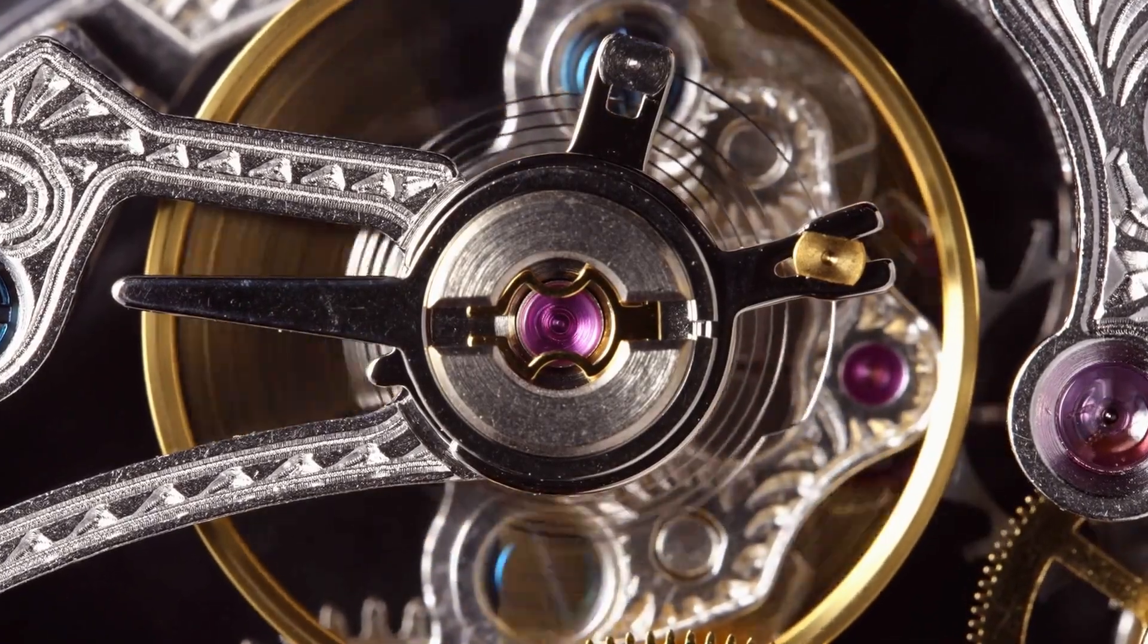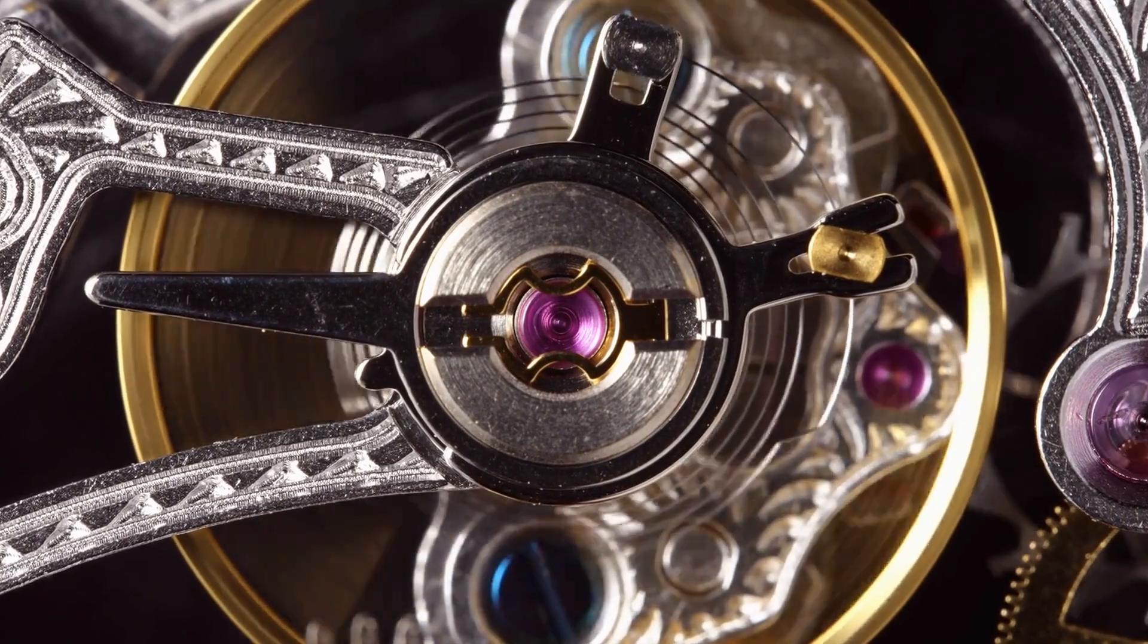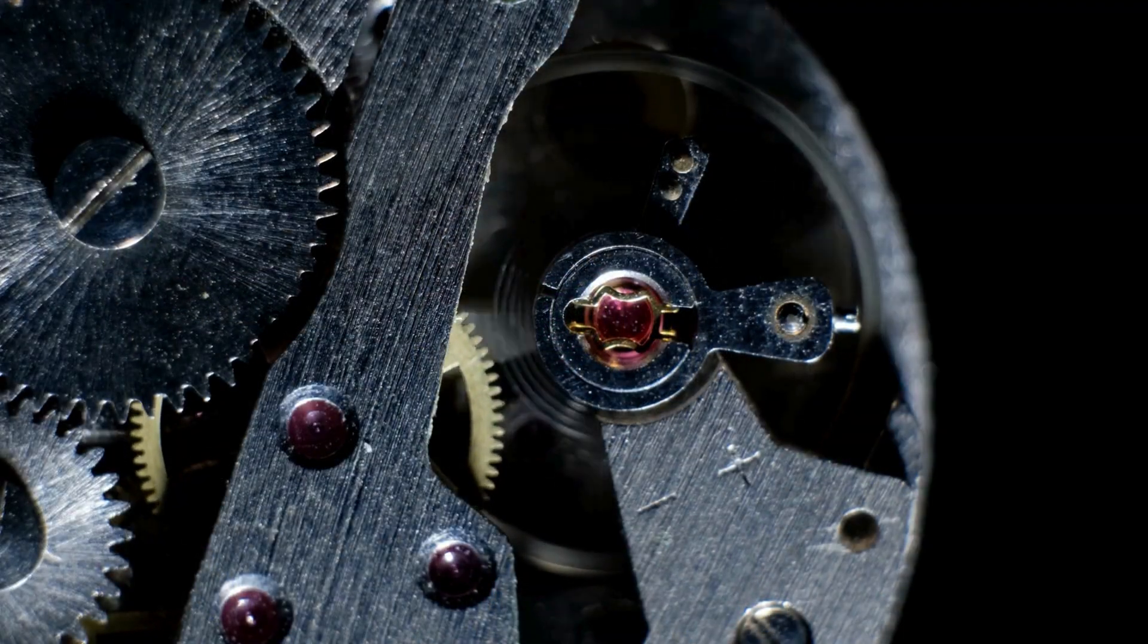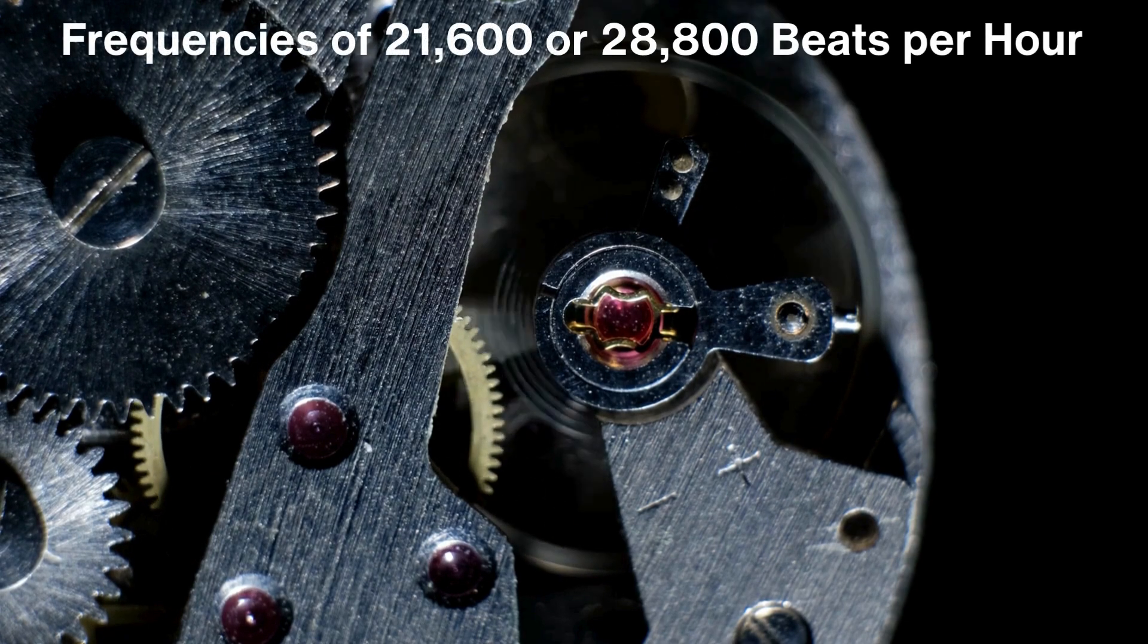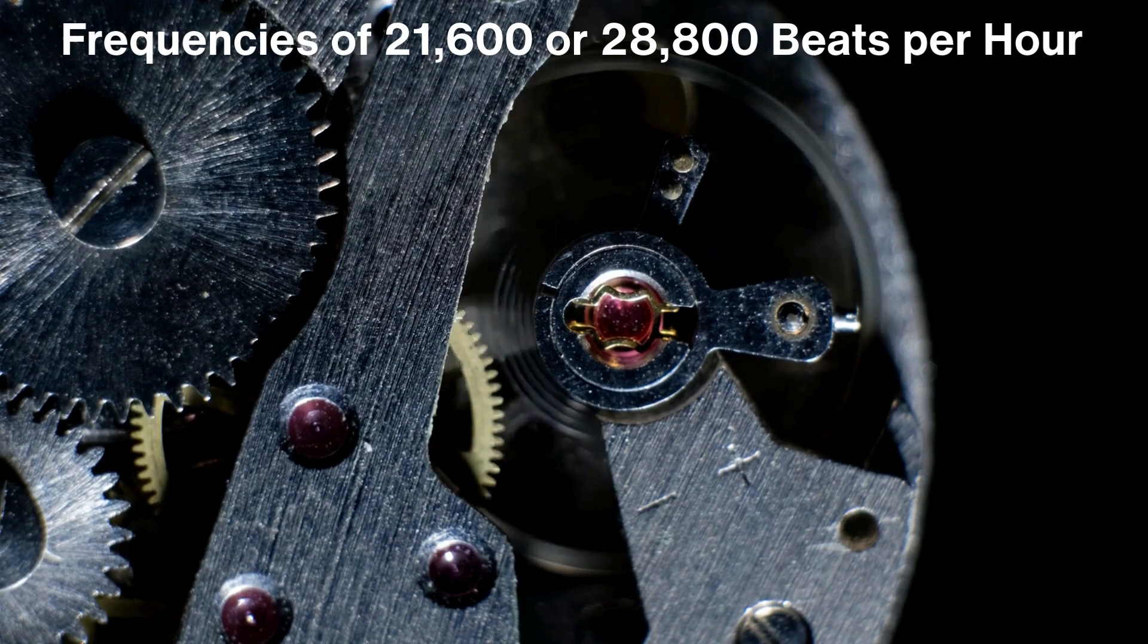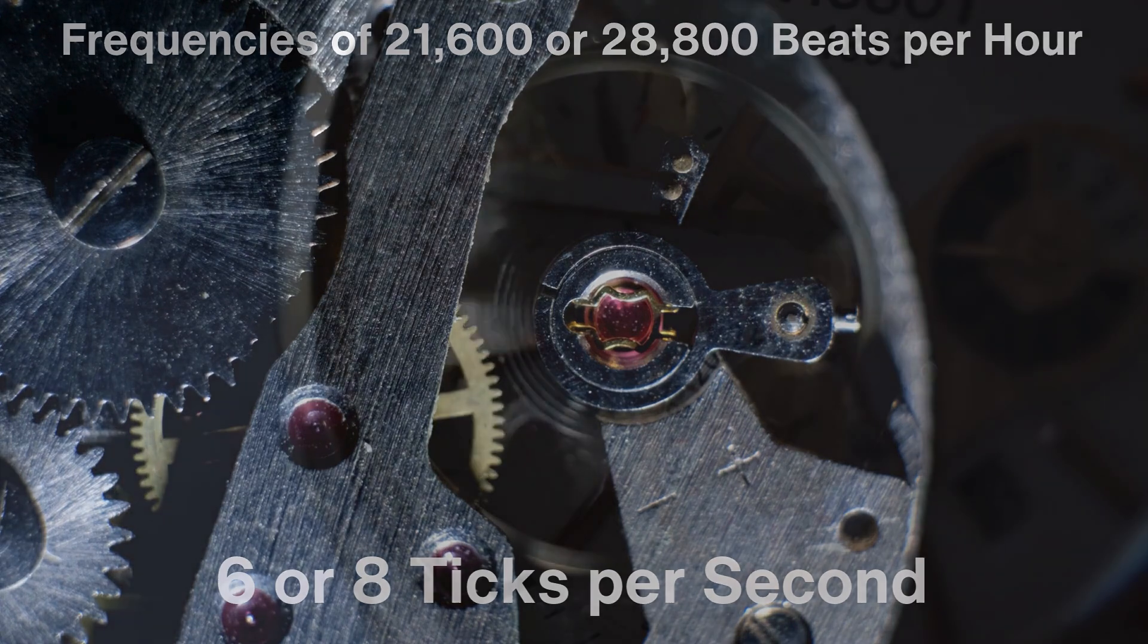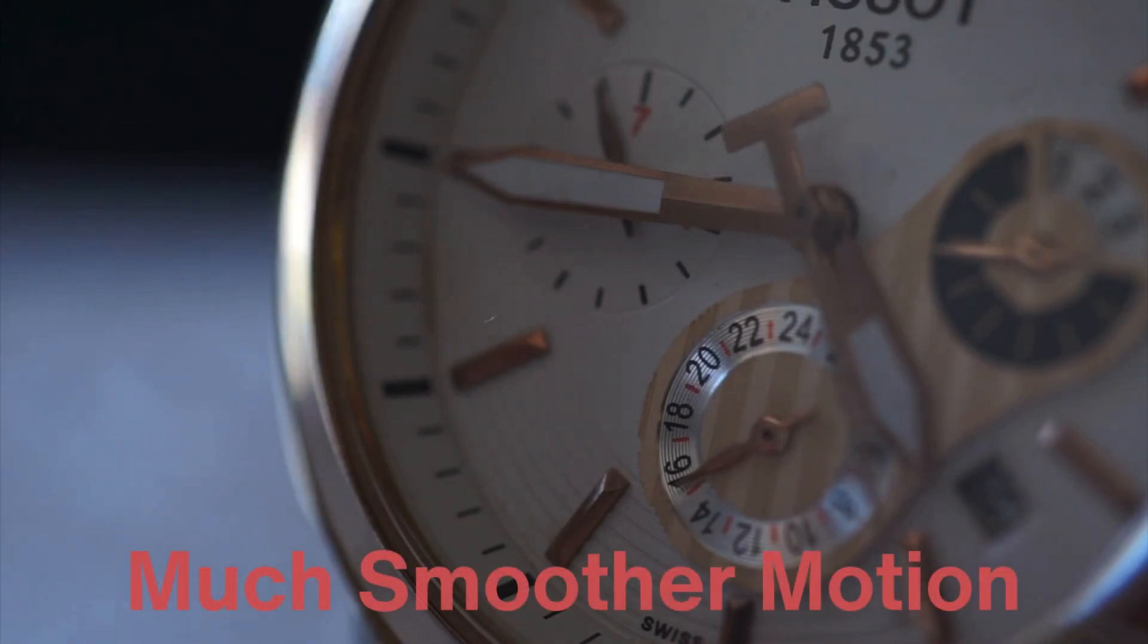The consistency of the balance wheel's oscillations is what makes it possible for a mechanical watch to keep time. In fact, many high-end mechanical watches have balance wheels that oscillate at frequencies of 21,600 or 28,800 beats per hour, which translates to 6 or 8 ticks per second. This is why you'll notice that the second hand of a mechanical watch has a much smoother motion compared to a quartz watch, which typically ticks once per second.